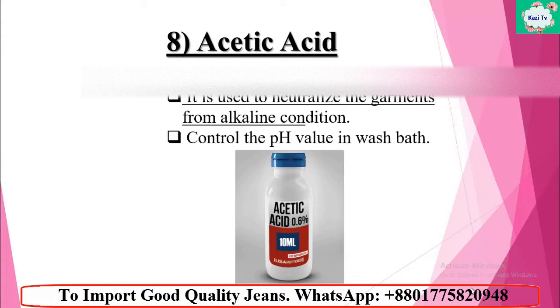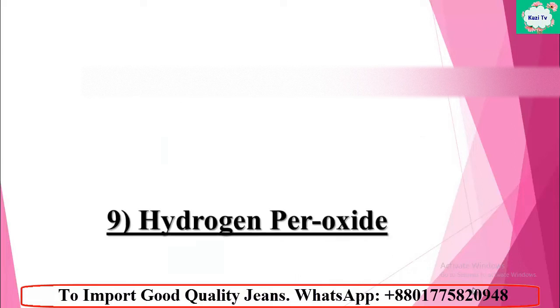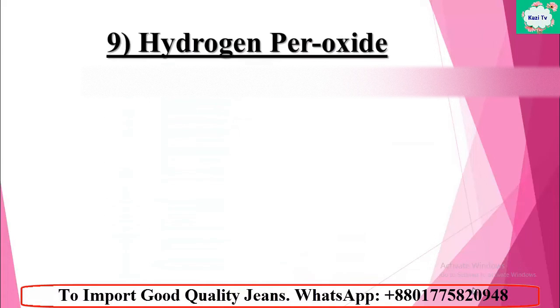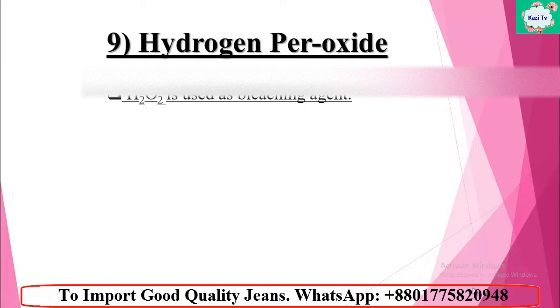Number eight: acetic acid. Acetic acid is used to neutralize the garments from an alkaline condition. It is also used to control the pH level in wash baths.